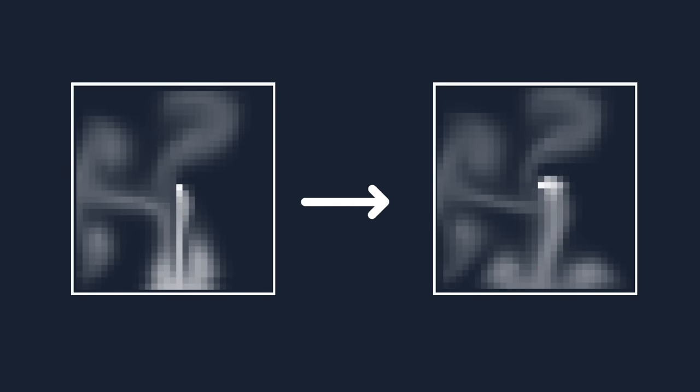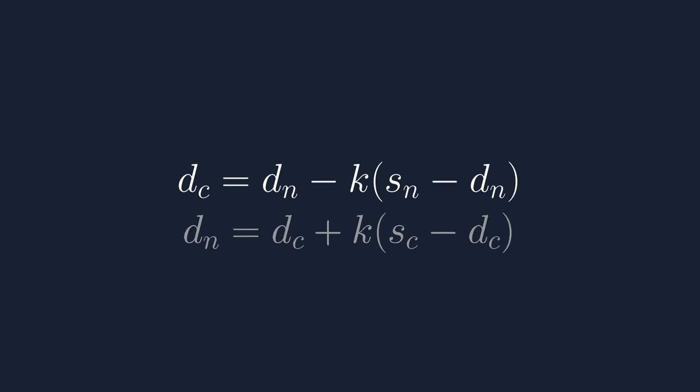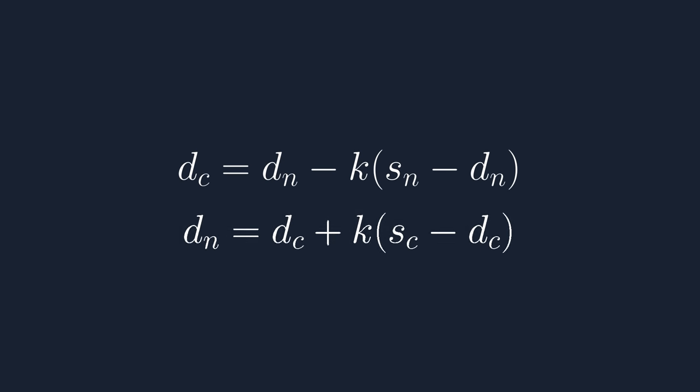Coming up with an equation to represent this, we can see that it's very similar to the previous one, except the current and next are swapped, and it's minus instead of plus. Rearranging this to make dn the subject, we can see that it's a hyperbolic relation and not a linear one.